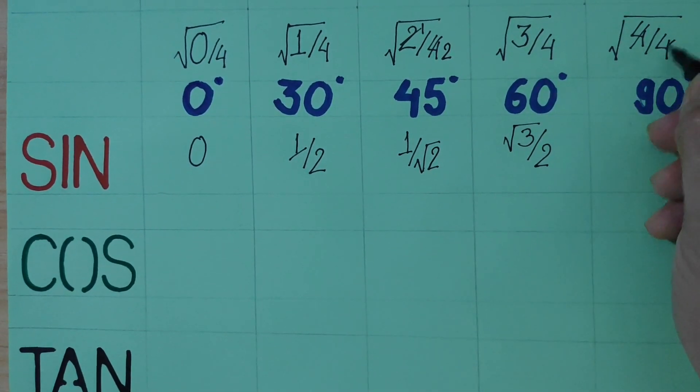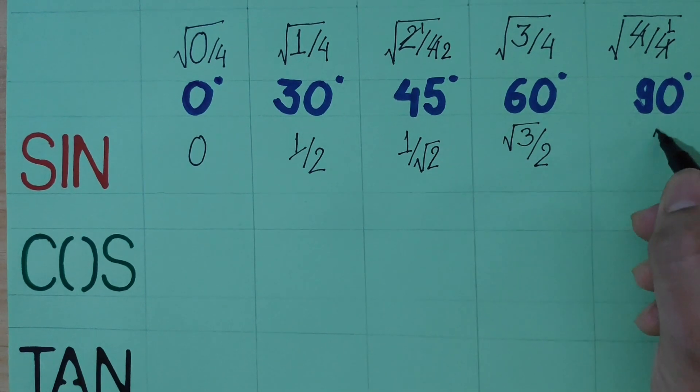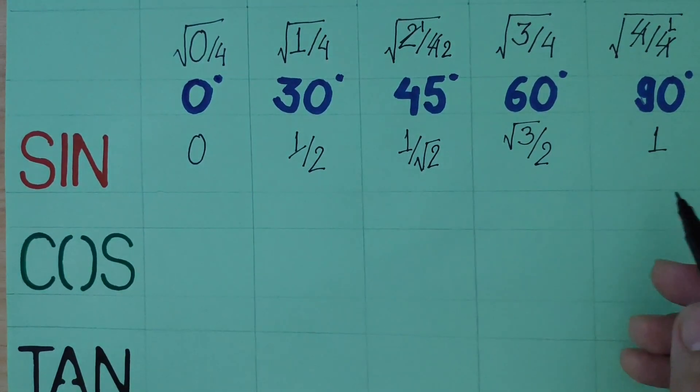Now 4 over 4 cancel. So square root of 1 is 1. So sin 90 is 1.